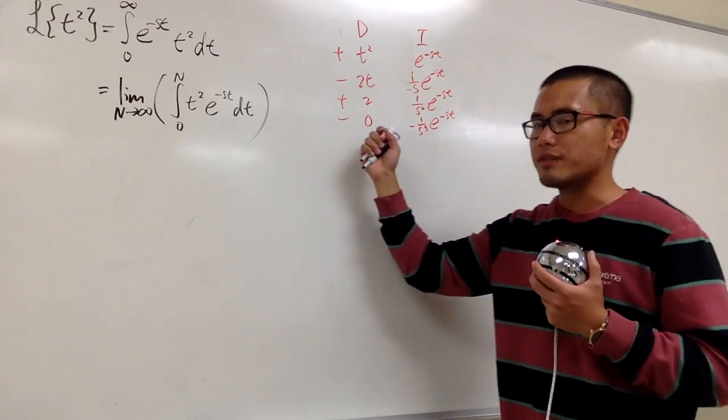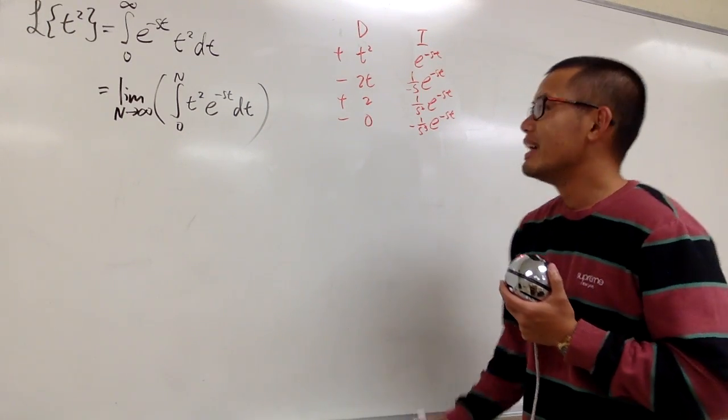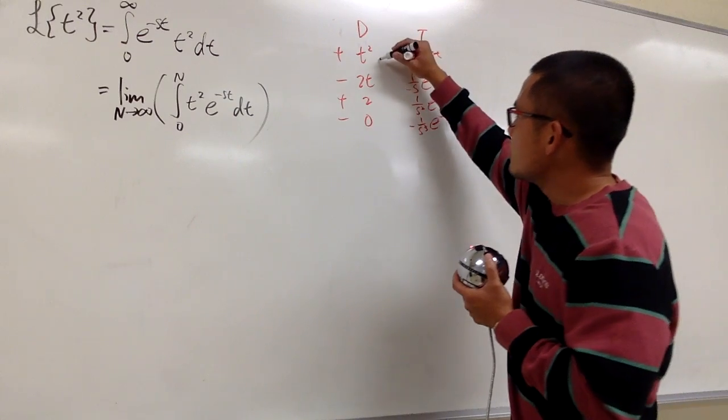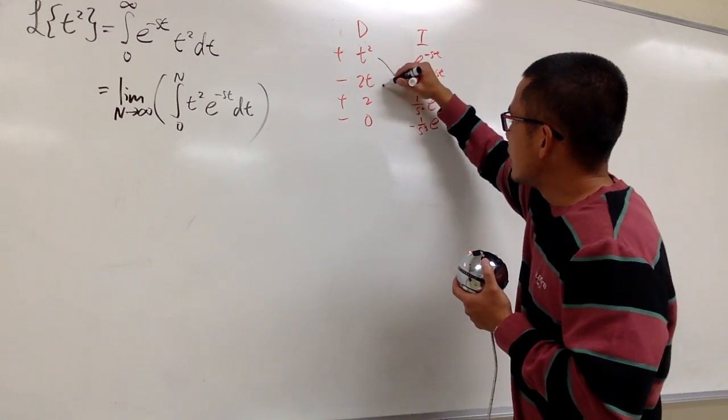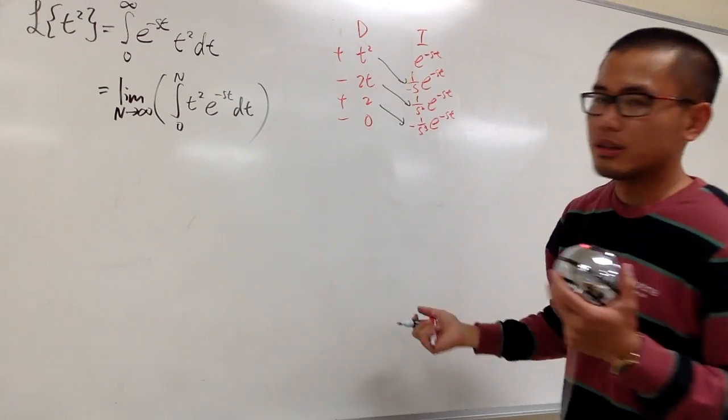We stop here because we have 0 in the D column. The products of the diagonals give us the answer — and since we reach 0, this is the easy case.